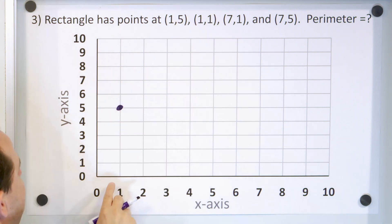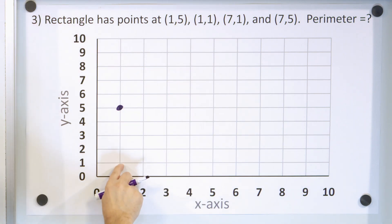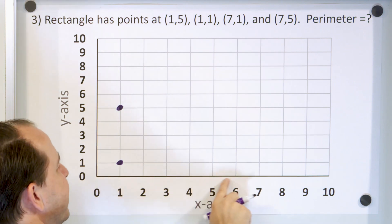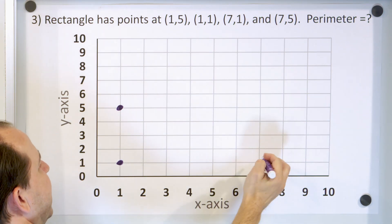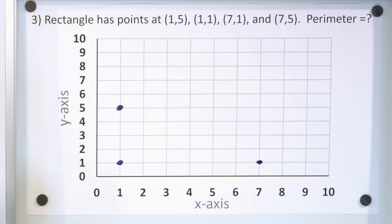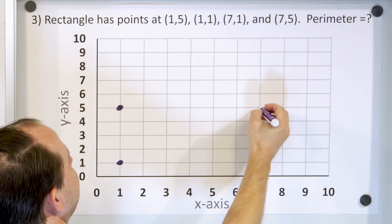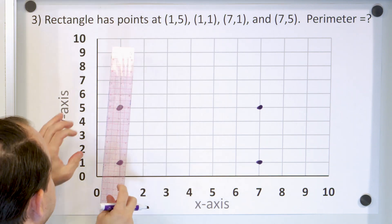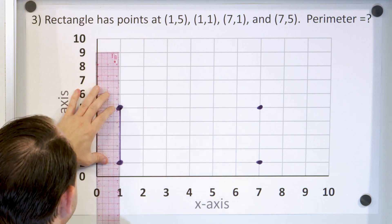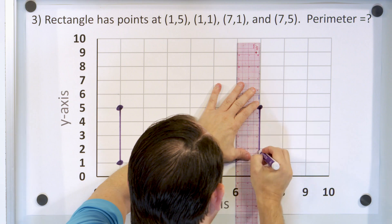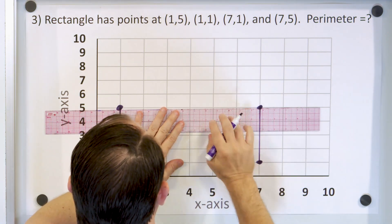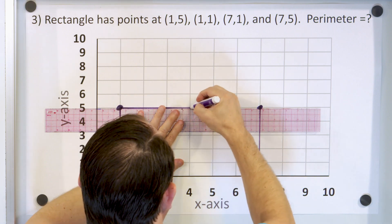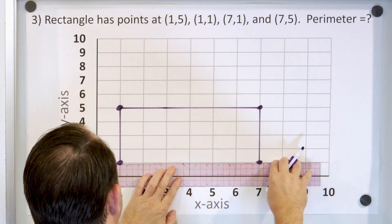Next, 1,1 — X is 1, Y is also 1. Then 7,1 means X is 7 and Y is 1, so the next corner is here. You could probably guess where the final corner is — 7,5 means X is 7 and Y is 5, so the final corner is right here. Let's draw those sides cleanly so we can really understand everything. And of course it forms a rectangle.